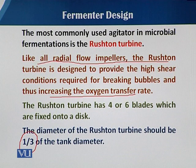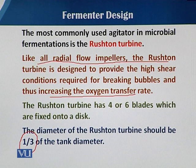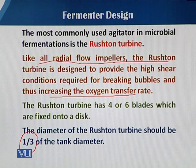The radial flow impellers and the Rushton turbine impellers are mostly used when we need high mass transfer in terms of oxygen solubility and oxygen demand. That covers what I have discussed about the width of the impeller in the case of Rushton turbine impellers.